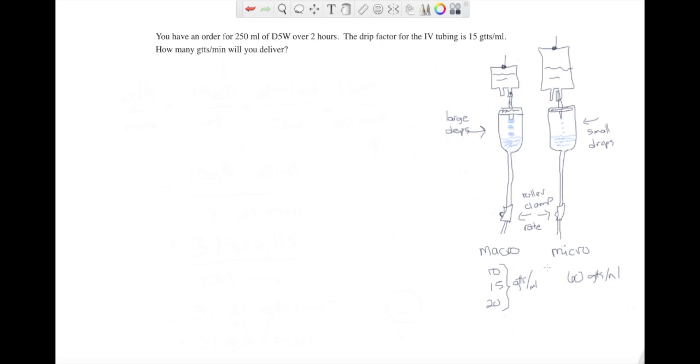Now with that we can start our first question. We have an order for 250 mL of D5W over two hours. The drip factor is 15 drops per mL and we want to know how many drops per minute. So the first thing I want to know is what do I need to solve for, and that's drops per minute.